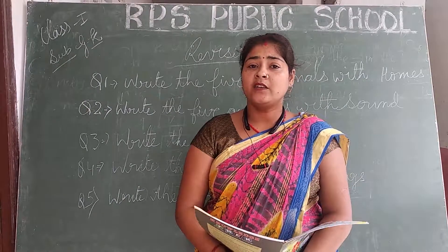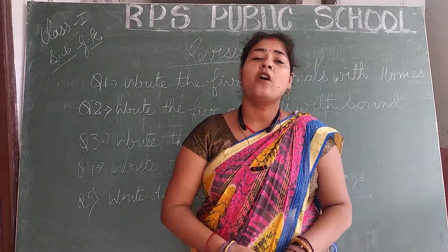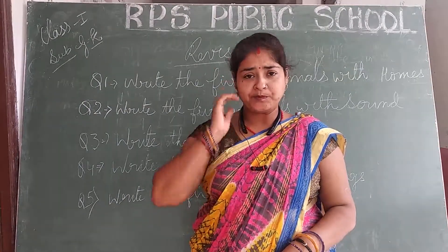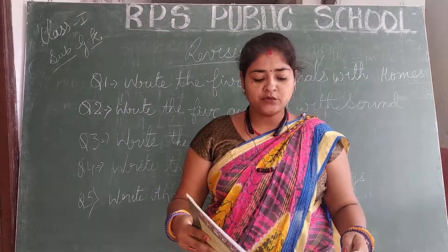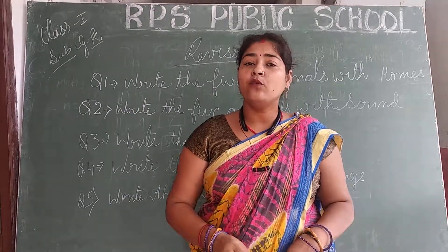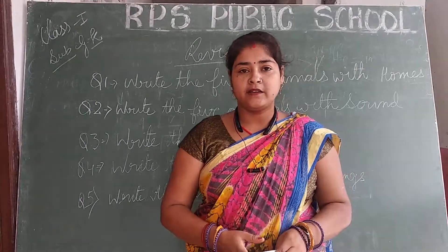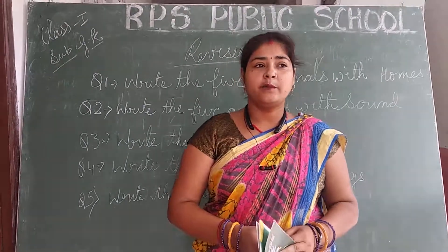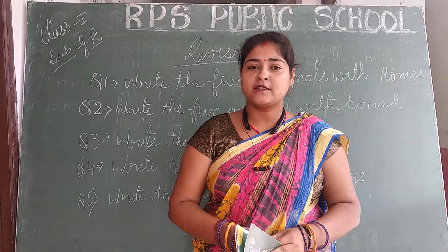Like dog — dog's house is a kennel. And cow — cow's house is a shed. Bird's house is a nest.